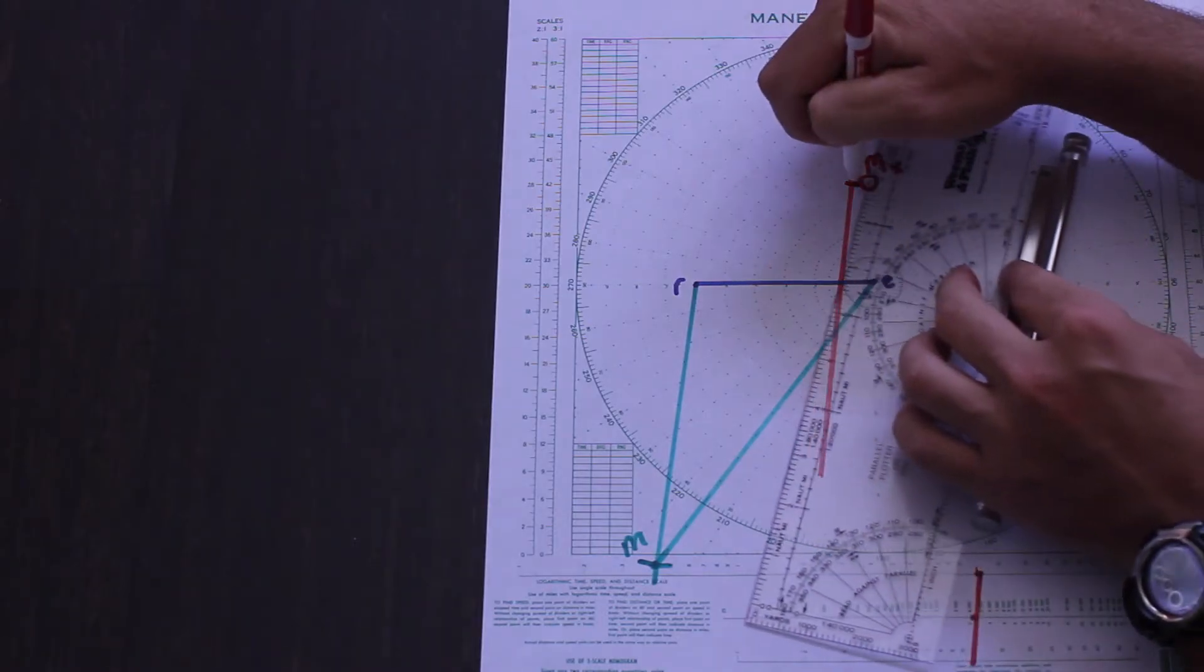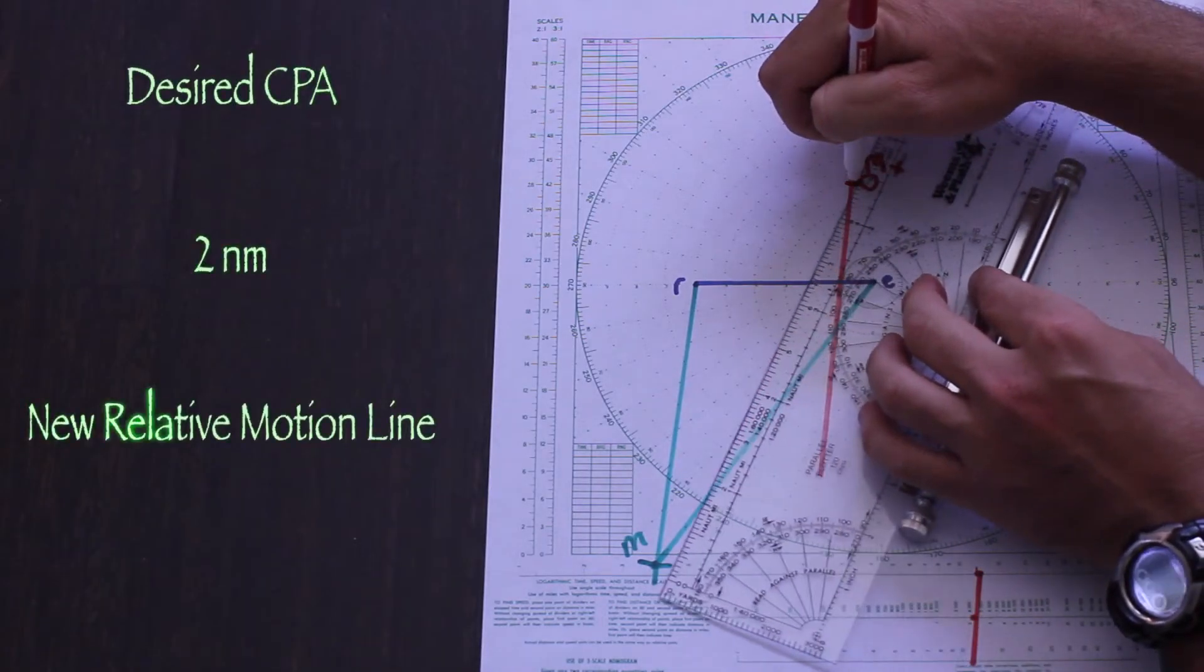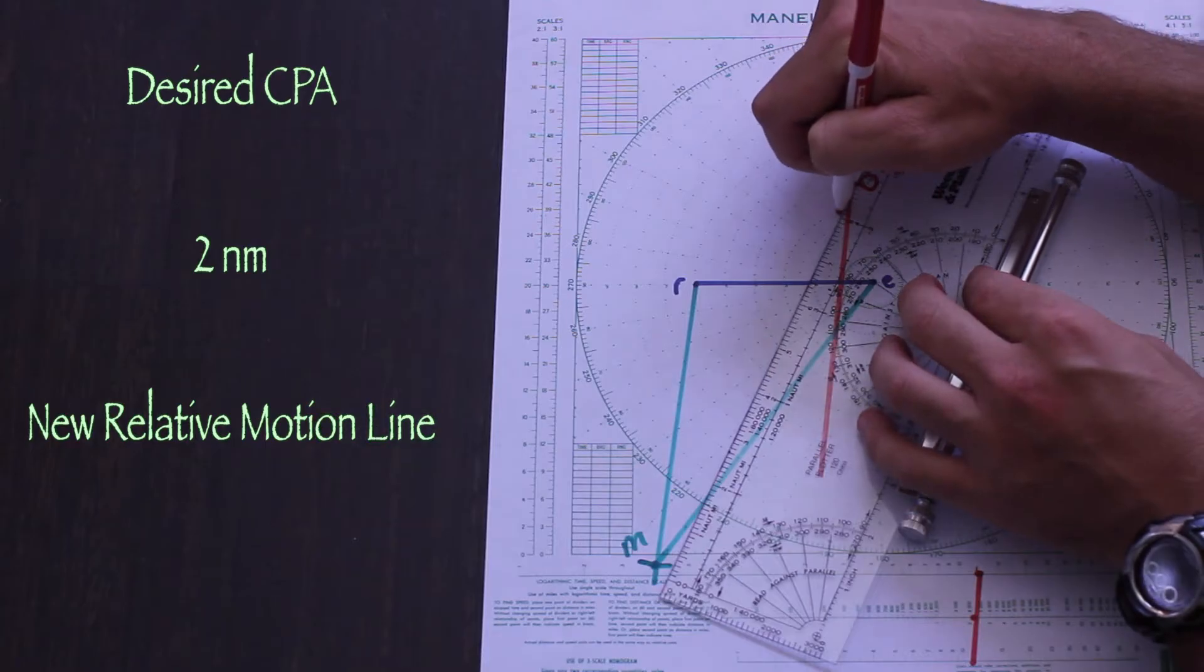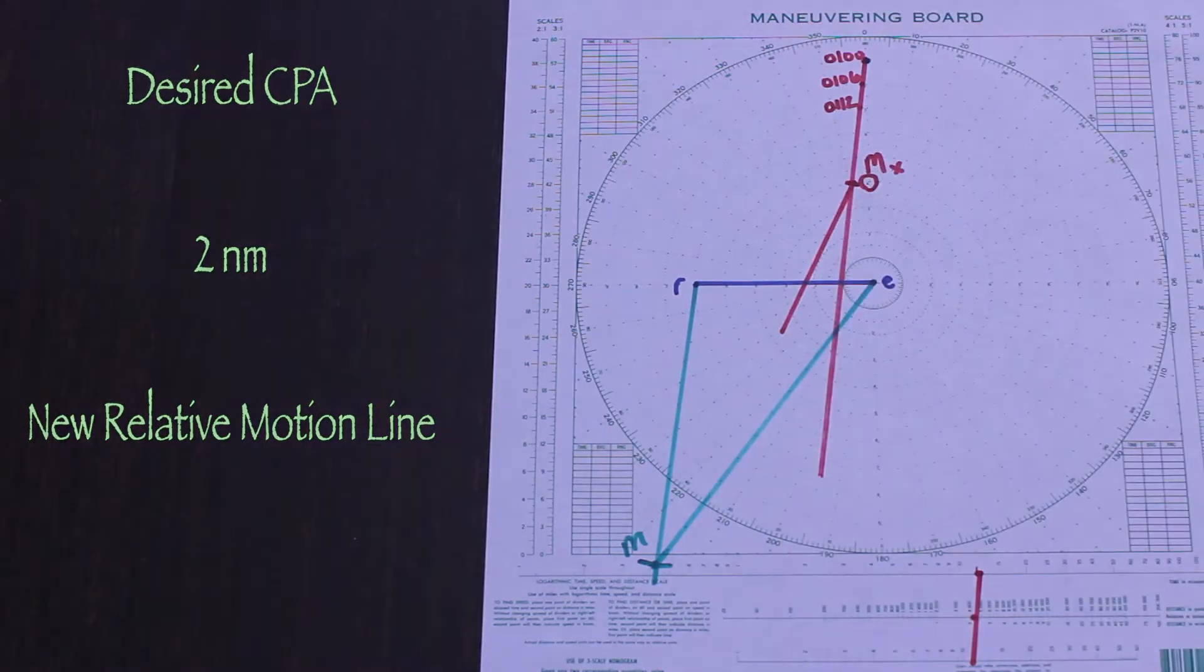Then we decide what we want the new relative motion line to do. If we want to open the contact up to 2 nautical miles, we draw the new relative motion line so it passes us at 2 nautical miles.